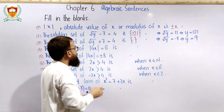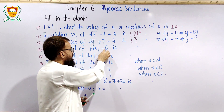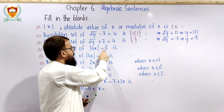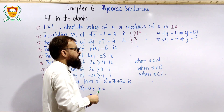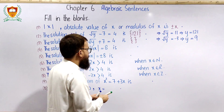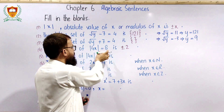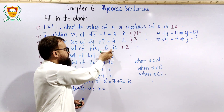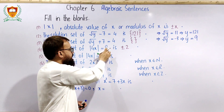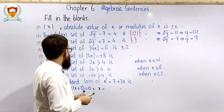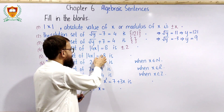اگلا statement: |4x| = 8۔ Absolute value ہٹانے پر plus minus آئے گا: 4x = ±8، پھر 4 سے divide کریں تو x = ±2 آئے گا۔